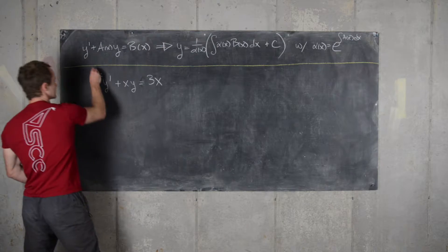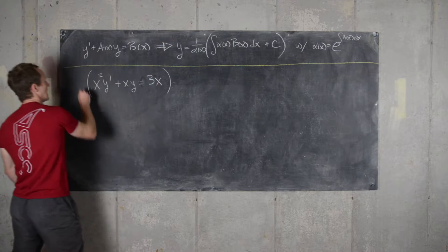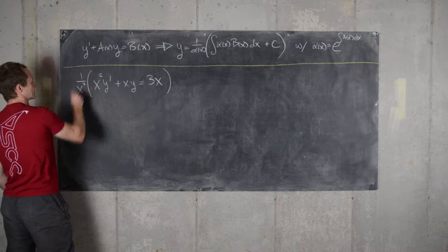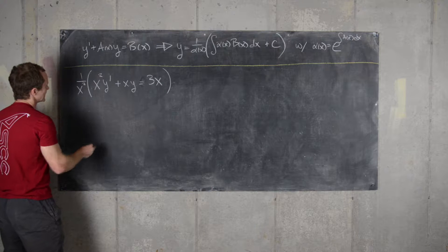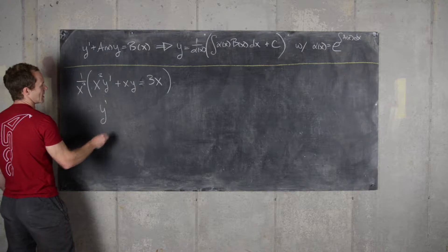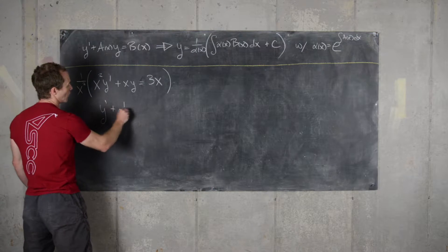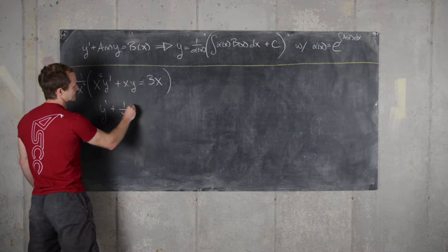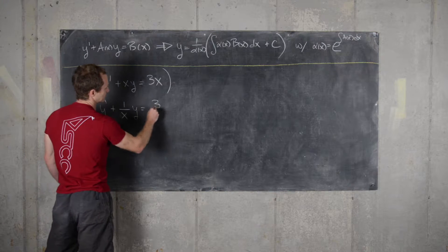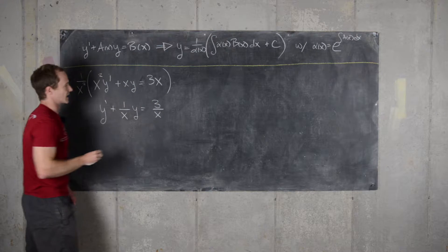We can take this entire differential equation and multiply it by 1 over x squared. That's going to give us y prime plus 1 over x times y equals 3 over x.